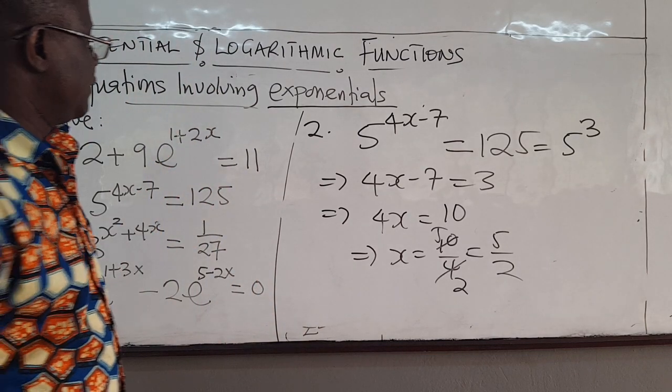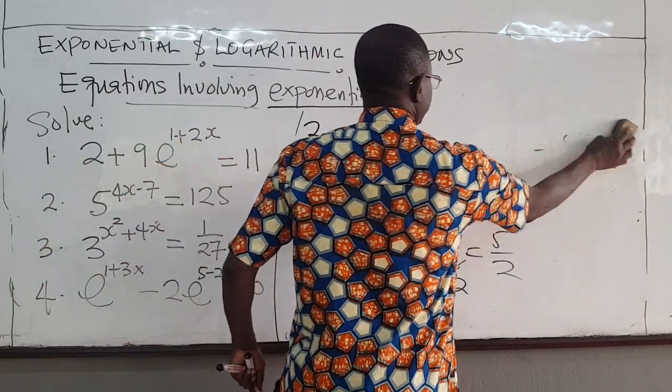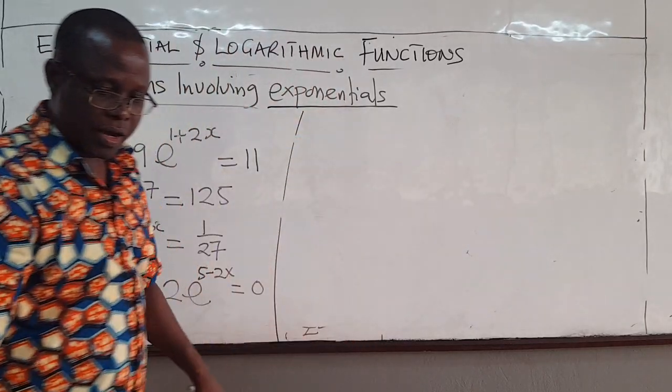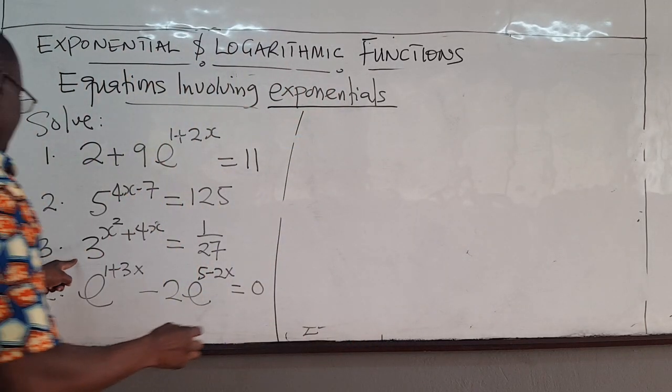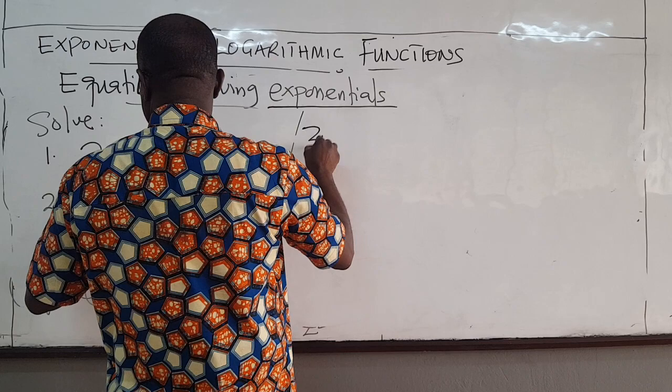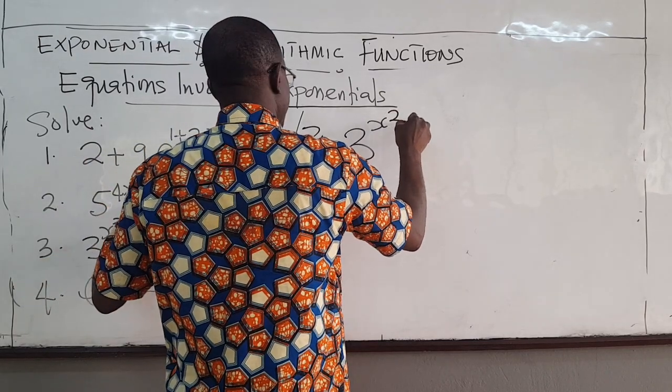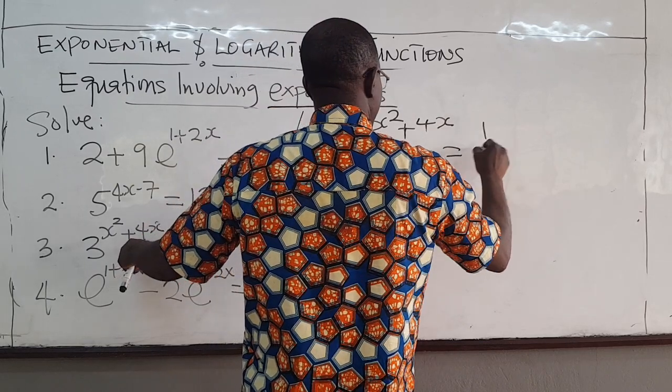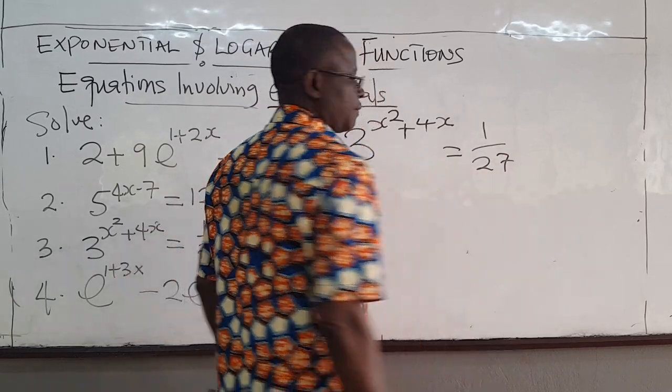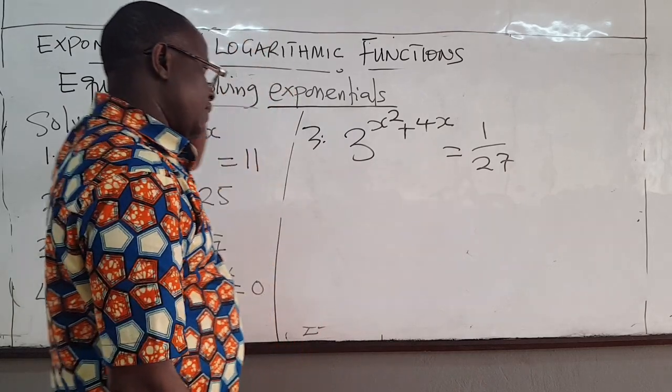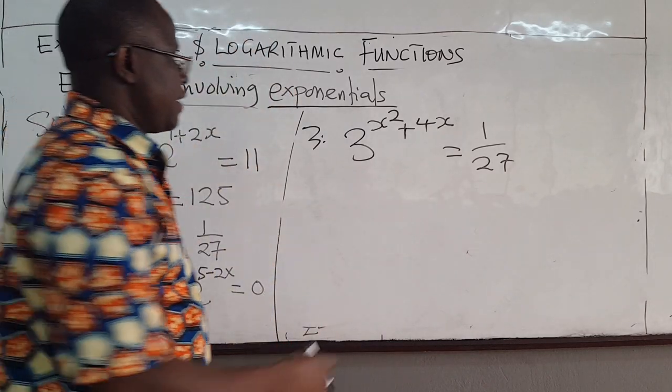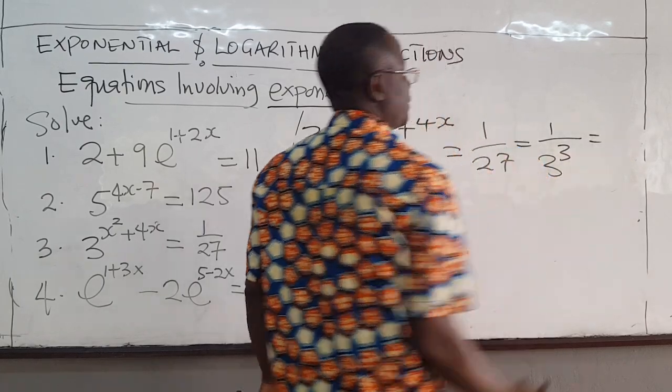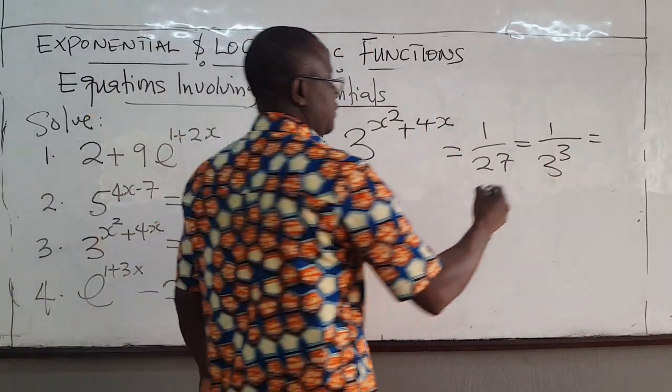Let's solve this one. We have 3^(x²+4x) = 1/27. Remember, 27 is the same as 3 to the power of 3. This is 1 over 3^3. And that is 3^(-3).